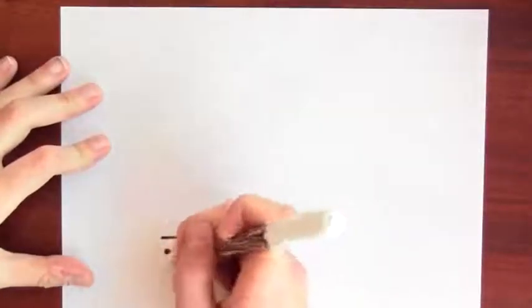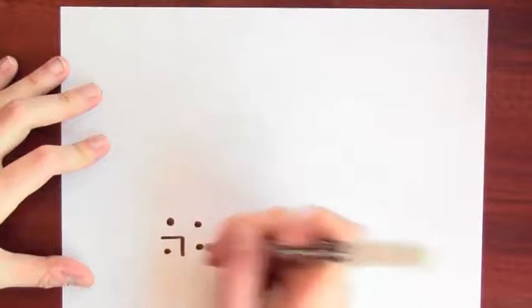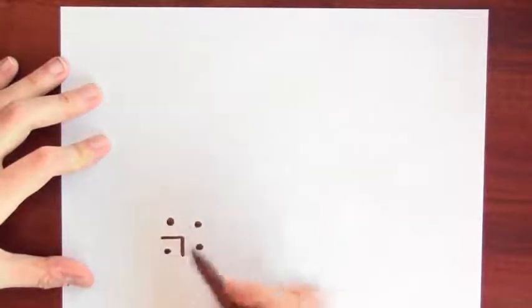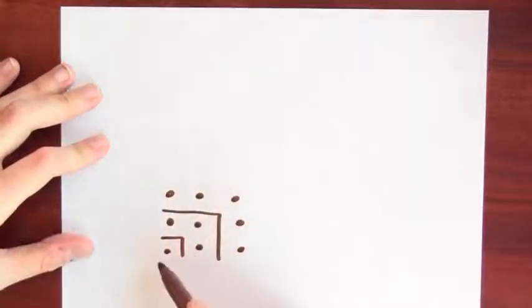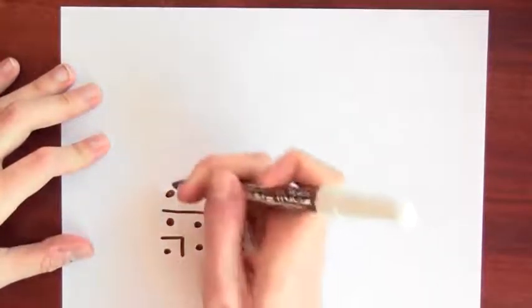And then I'll draw 3 more dots. This is 1 plus 3, it's 2 squared. And I'll draw 5 more dots. 1 plus 3 plus 5, that's 3 squared.